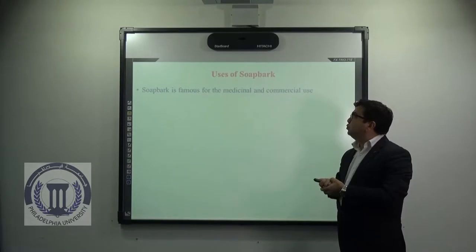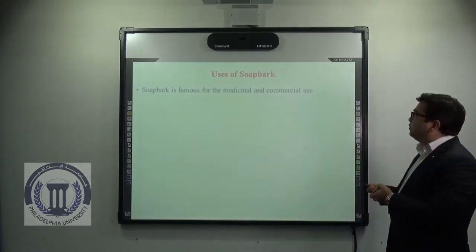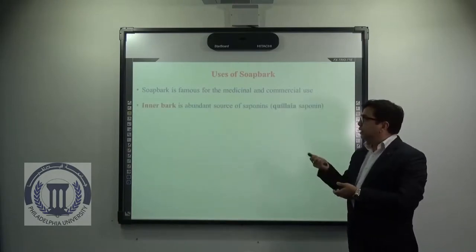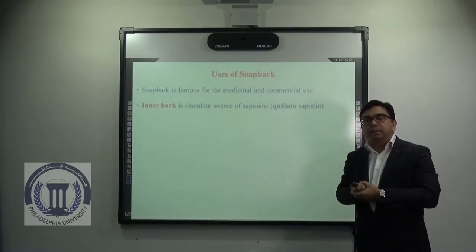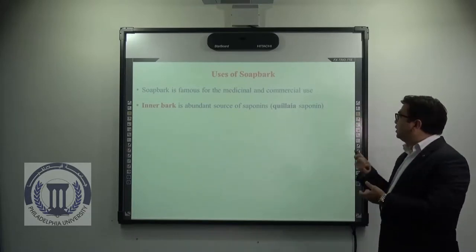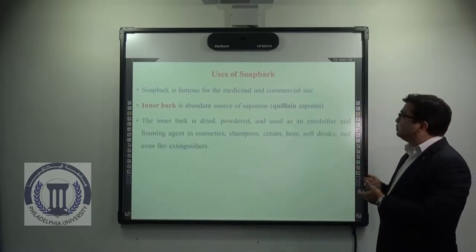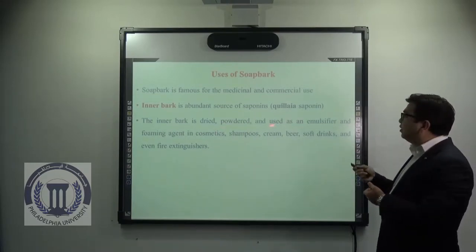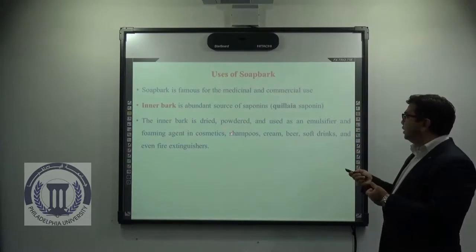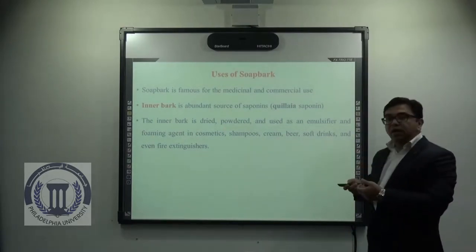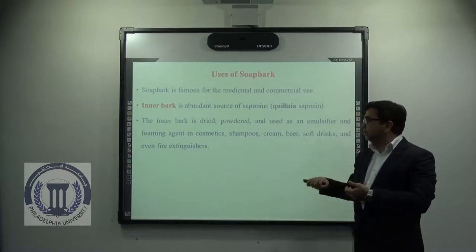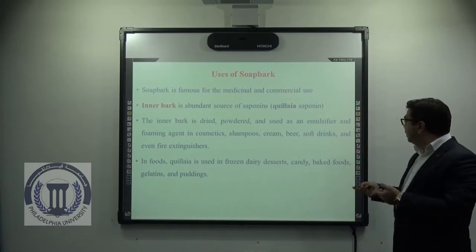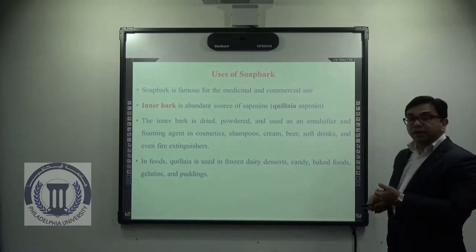Now coming to uses of soap bark. Soap bark is famous for both medicinal and commercial uses. The inner bark is an abundant source of saponins, also known as Quillaja saponins. The inner bark is mainly dried, powdered, and used as an emulsifier and foaming agent in cosmetics, shampoos, creams, beer, soft drinks, and even in fire extinguishers. In foods, Quillaja is used in frozen dairy desserts, candy, baked goods, gelatins, and coatings.